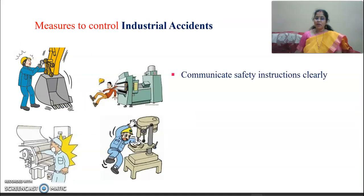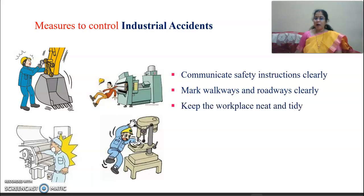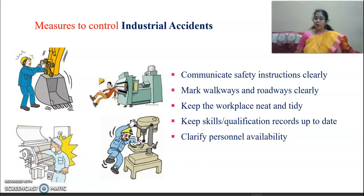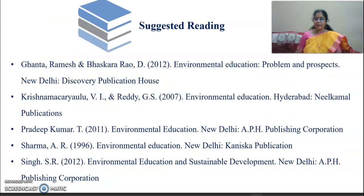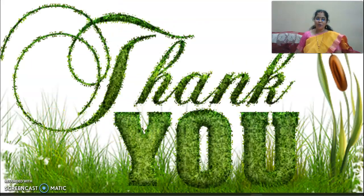Measures to control industrial accidents include: communicate safety instructions clearly; mark walkways and roadways clearly; keep the workplace neat and tidy; keep skill and qualification records up to date; clarify personal availability; turn data into information and information into insight for all people; and select the best team for specialist tasks. These are some suggested books for further reading. Thank you for listening — wish you all good luck.